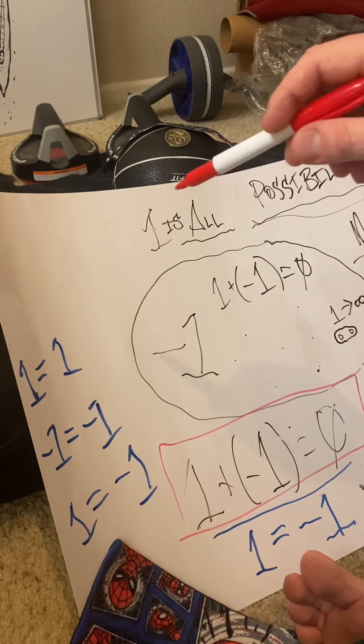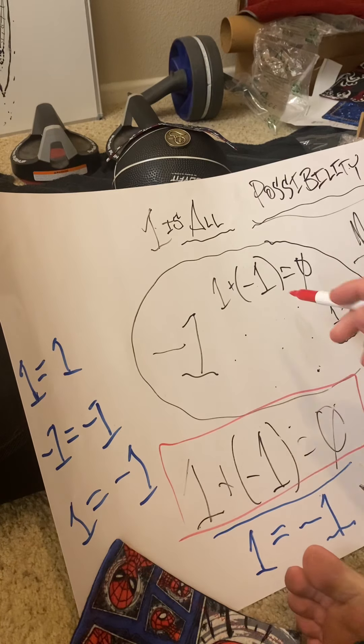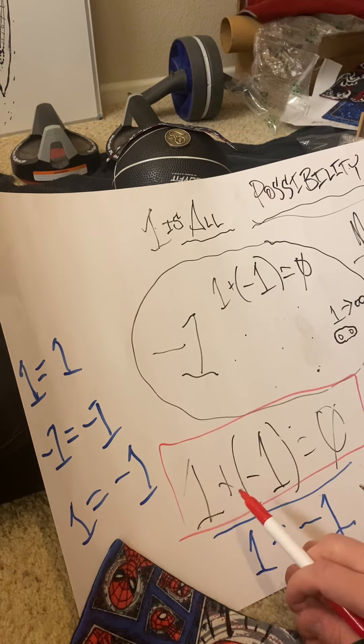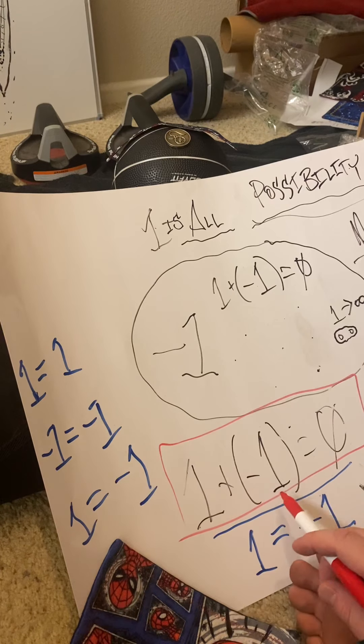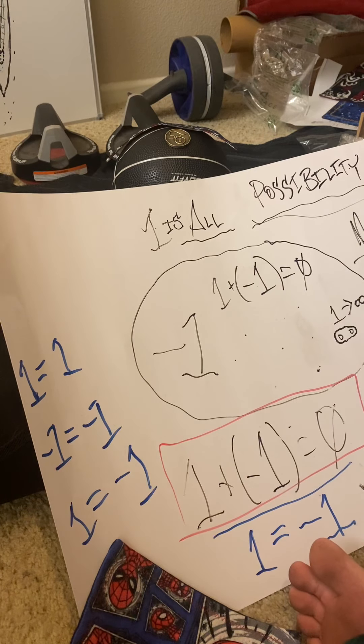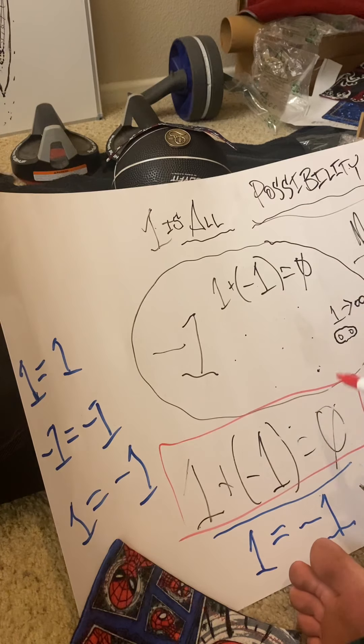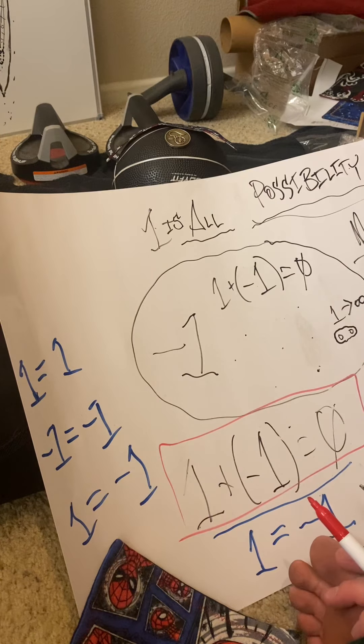So one is equal to negative one. As long as you're the system, from inside the system, it is one plus a negative one is equivalent to zero, or in this case, whatever your midpoint between these two polars are. But you got to understand, in order to have this perspective, you have to have another dimension. We're talking about two-dimensionality and just algebraics.